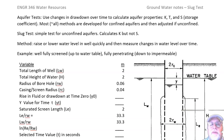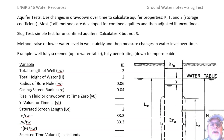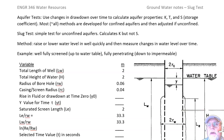Probably the simplest aquifer test is a slug test, done typically for unconfined aquifers. Most aquifer tests are for confined aquifers, and if an aquifer is unconfined we have some adjustments. It's called a slug test because the way it works is we put a slug of water in or take a slug of water out of a well, and then we watch how fast it goes back to where it was.